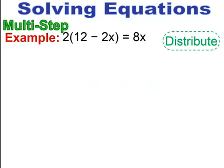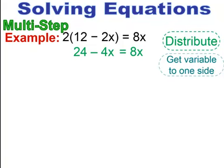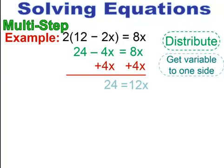In this next one, we have the distributive property, but notice there's also a variable on both sides of the equal sign. First, do the distributive property — distribute the 2 to get 24 minus 4x equals 8x. The variables are on opposite sides, so move the minus 4x to the 8x by adding 4x to both sides, leaving 24 equals 12x. Divide through by 12 to get x equals 2.